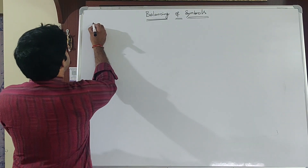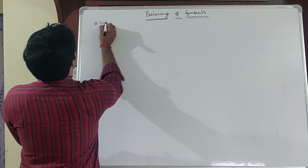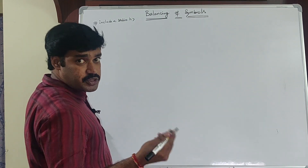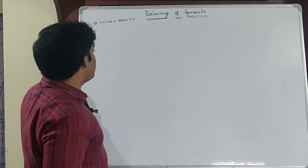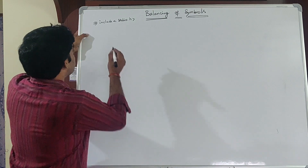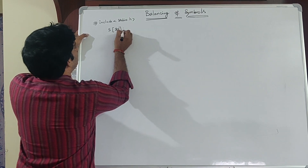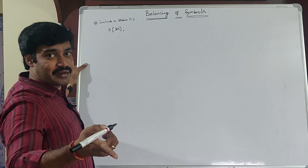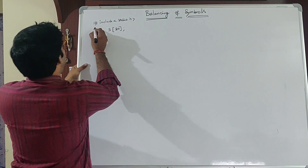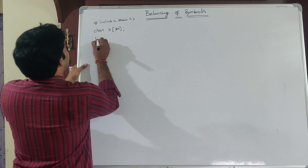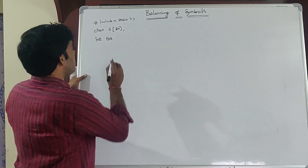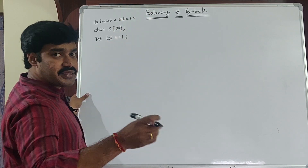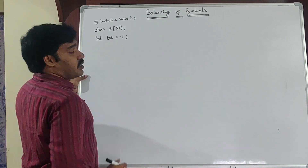The first line of the program is #include <stdio.h>, the standard input/output header file, because I am using printf and scanf functions. Next, declare the stack globally as an array of size 20. Since we are pushing opening symbols — which are characters — the data type of the stack is char. Initially, declare the TOS variable with a value of -1, since the stack is empty and TOS always points to the topmost element.